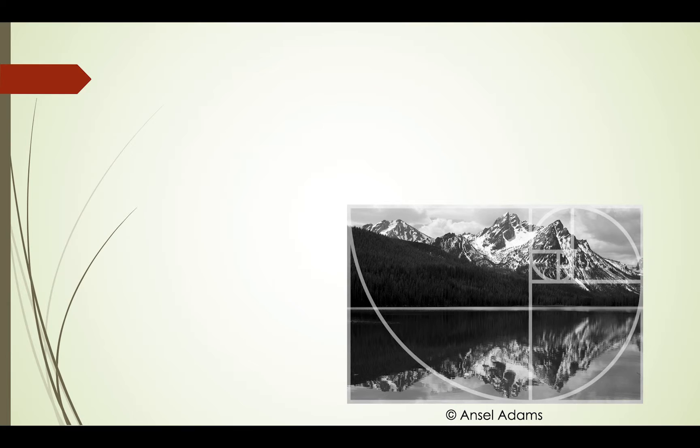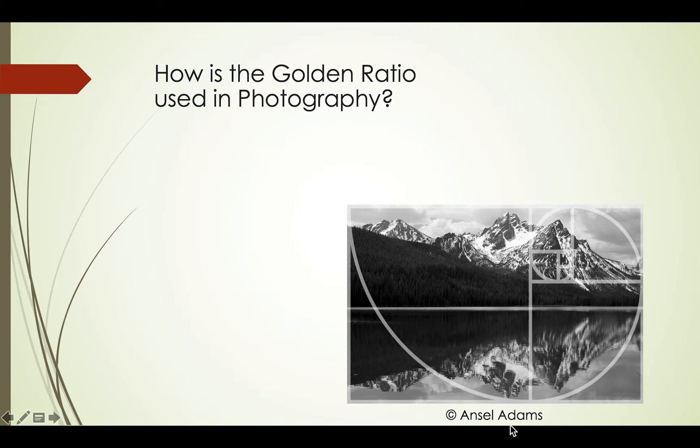How is the golden ratio used? Here we have an example of Ansel Adams in his picture in the golden ratio. The golden ratio allows your eye, the eye of the viewer, to focus on the main part of the image that you want them to see. Using video editing software, photographers can crop their photos using the golden ratio.